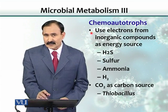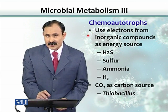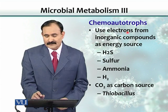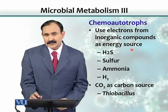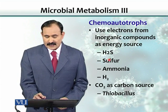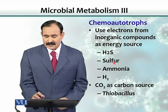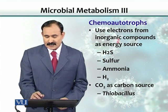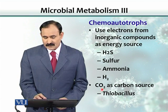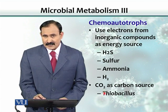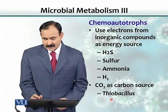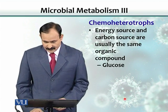The second major category is chemoautotrophs. They use electrons from inorganic compounds as an energy source, and can use hydrogen sulfide, sulfur, ammonia, and hydrogen for capturing electrons. If they use carbon dioxide as a carbon source, one example is Thiobacillus.